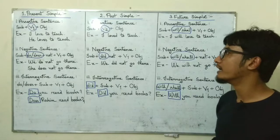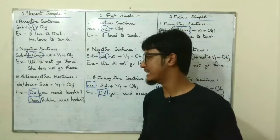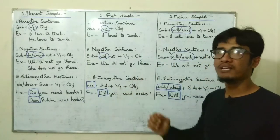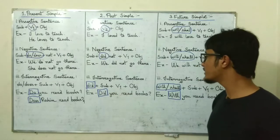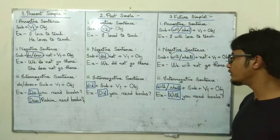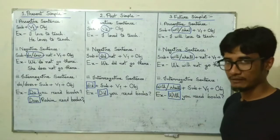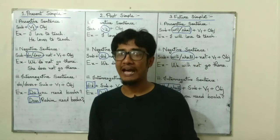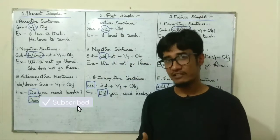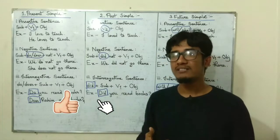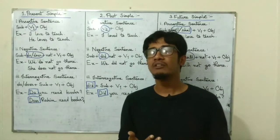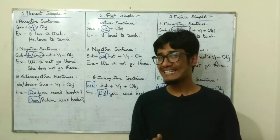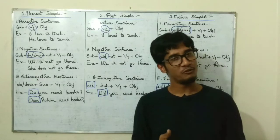So no change anywhere else. I hope you have understood where the changes lie in assertive, negative and interrogative sentences across present simple, past simple and future simple. If you can remember only these minor changes, I believe you will be able to make sentences quite easily and effectively. So thank you for staying with me.